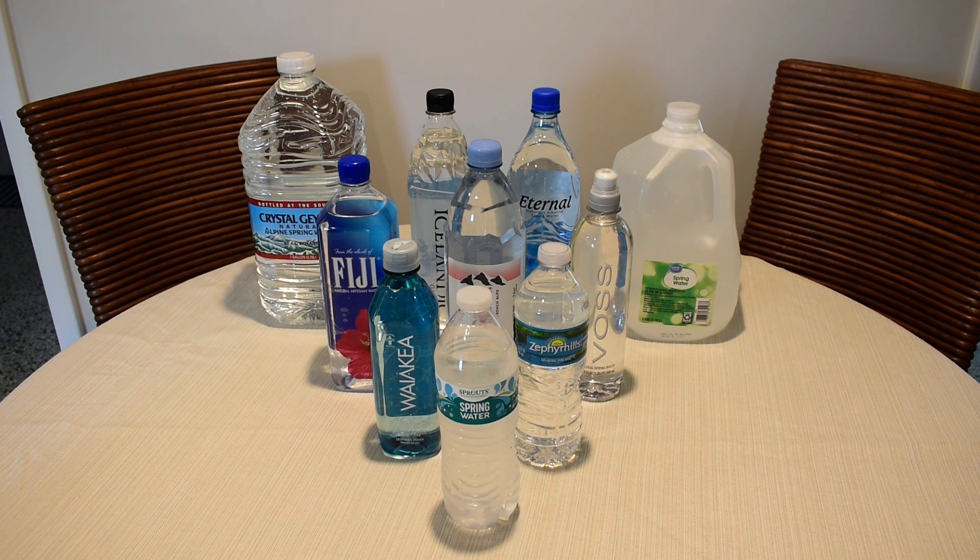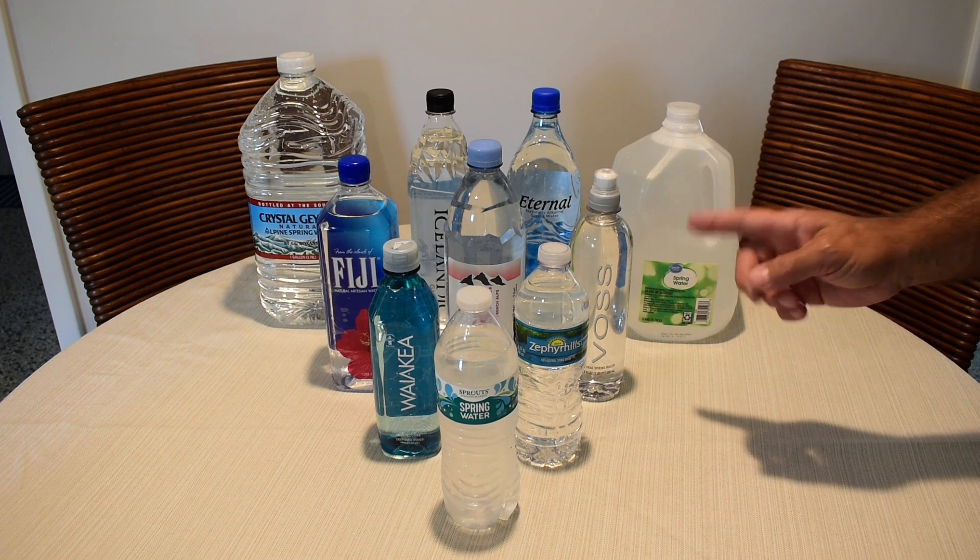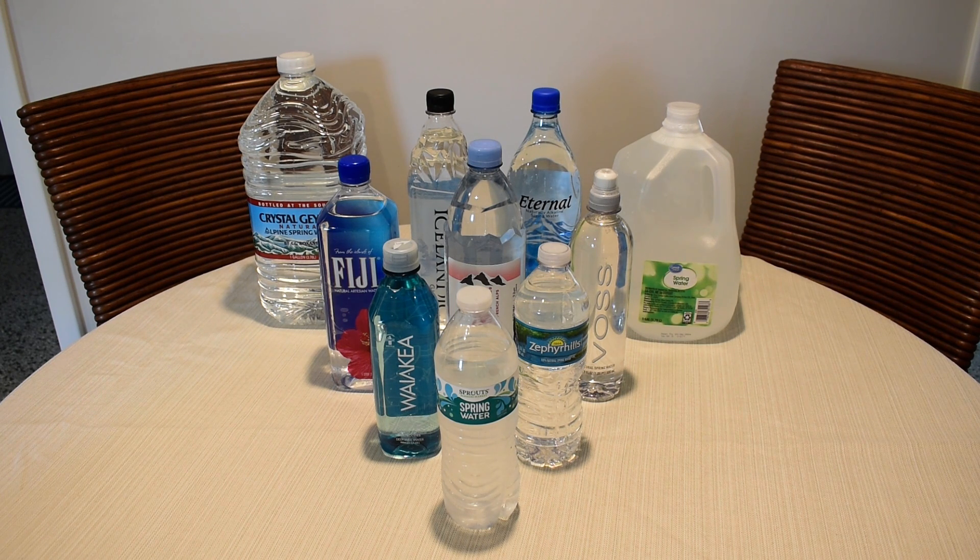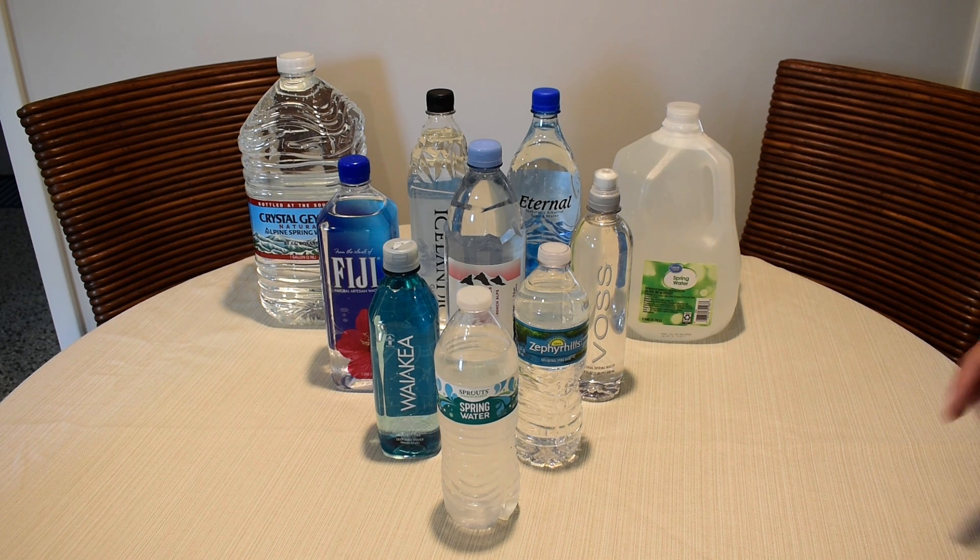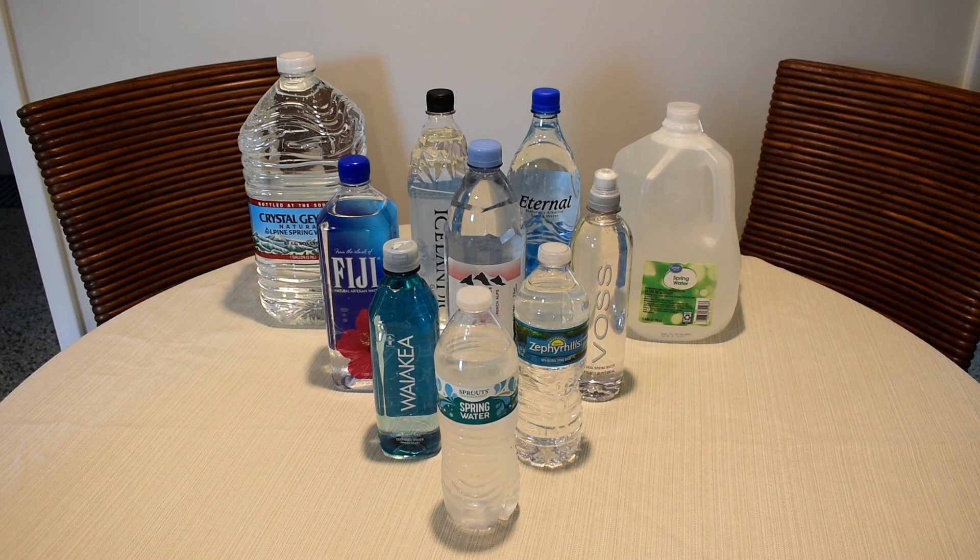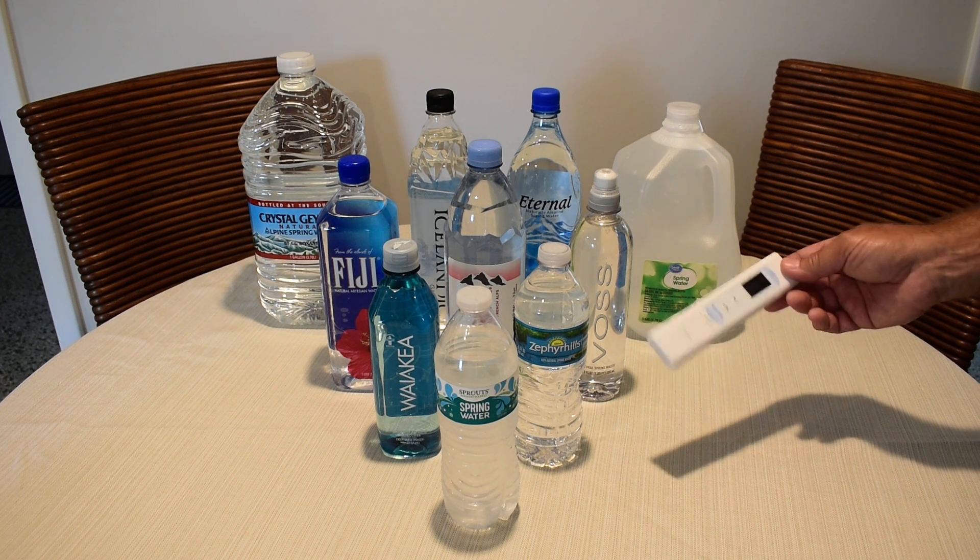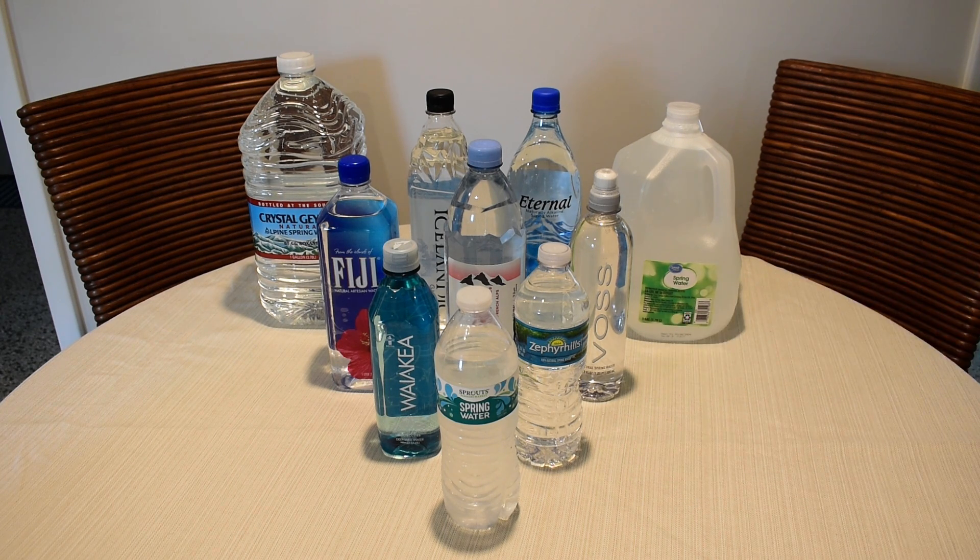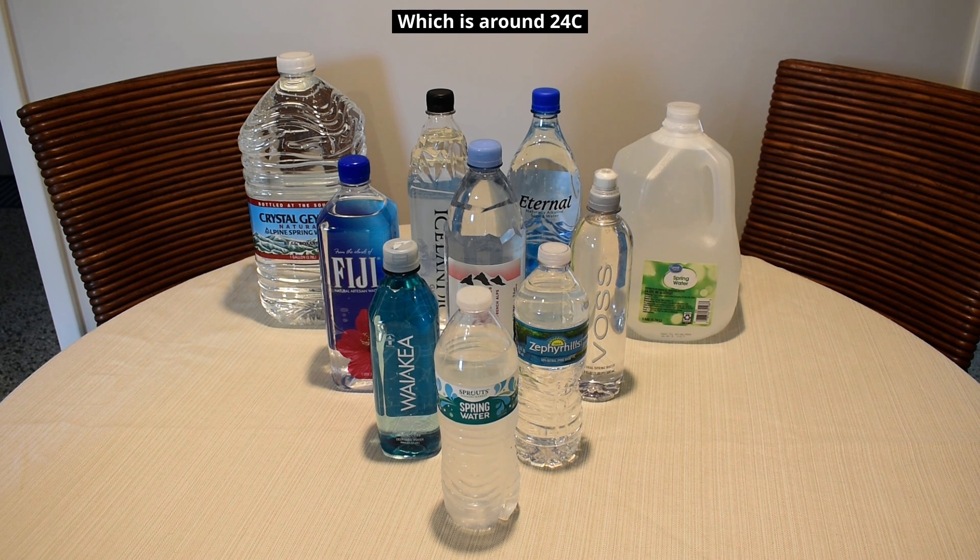And the last test we will be performing is for EC, or electrical conductivity. Ideally you want to have an electrical conductivity value that is as low as possible. Higher values would indicate more impurities in the water. This tester also has the ability to measure the temperature of the water, but we won't be looking at that test. All of these are at room temperature, around 75 degrees Fahrenheit.